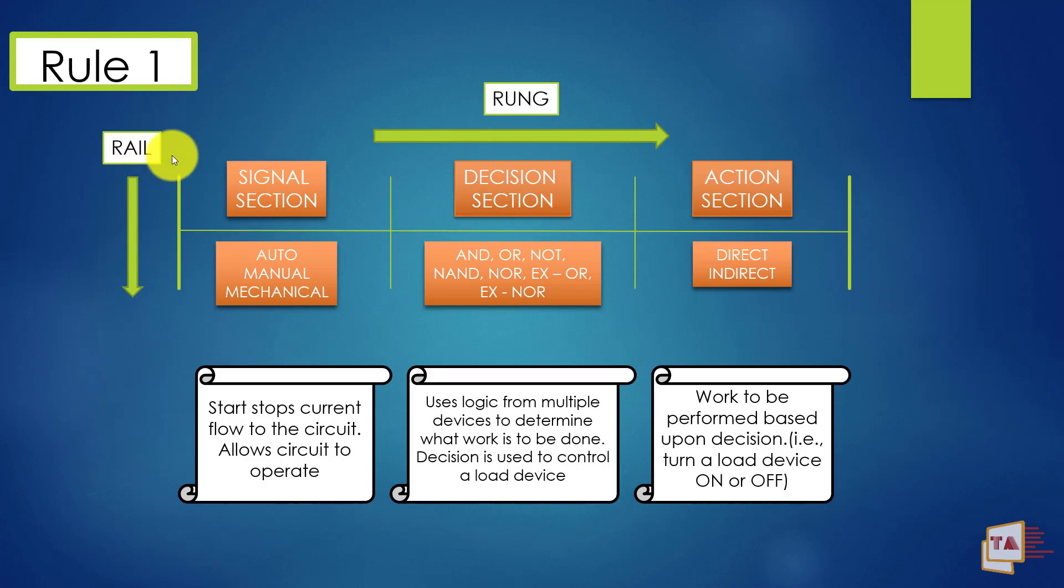So here is rule number one. This is the ladder overview. We have rung and rail on it in ladder section. Rail is nothing but power supply, so it has always power supply. This is the rung. In rung we have three sections: signal section, decision section, and action section.